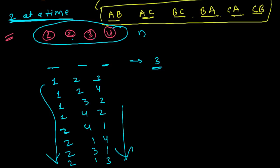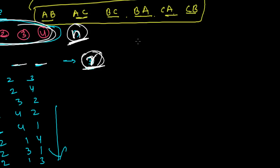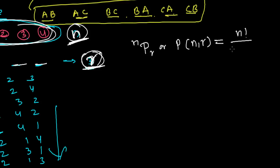Let me go to the generalization. Generally, while solving problems related to permutations, the total given numbers we represent by n, and the places that we need to fill we represent by r. So n number of objects we are going to fill in r different places. In how many ways can we fill n objects in r positions? In mathematical language, we say total permutations of n objects in r places, written as P(n, r), and this equals n factorial divided by n minus r factorial.